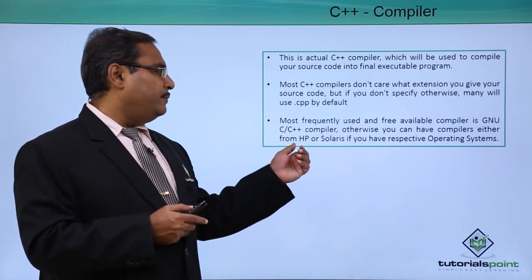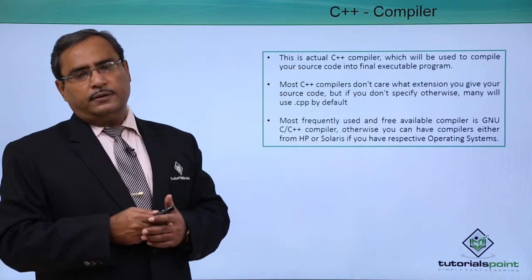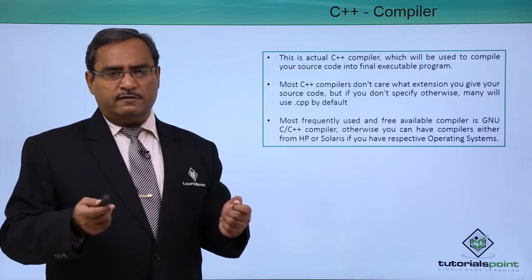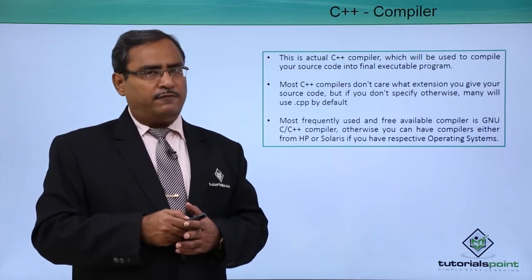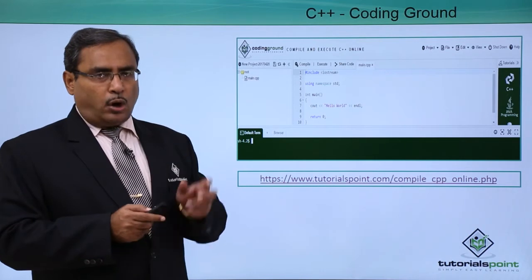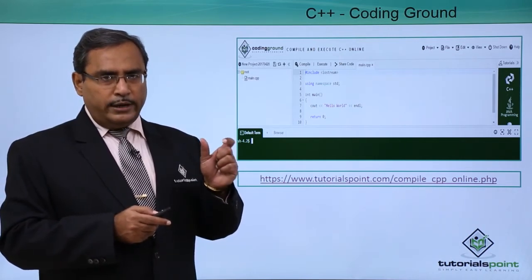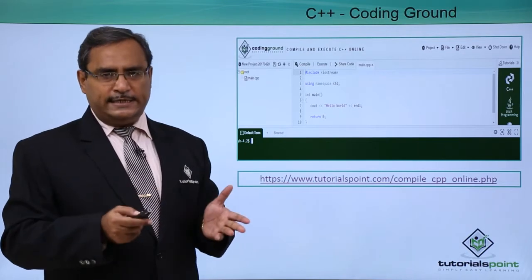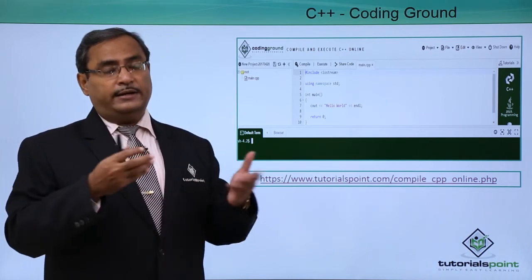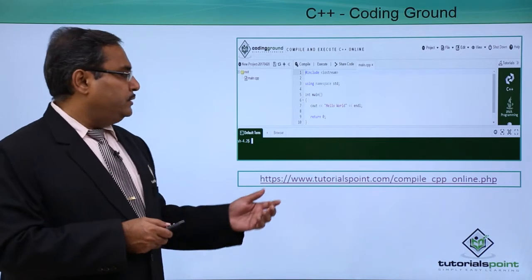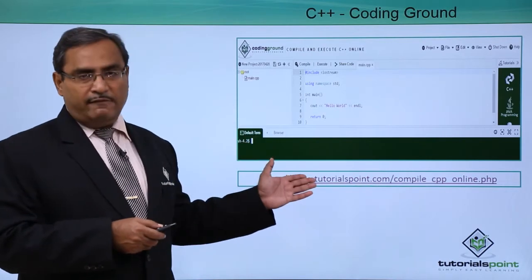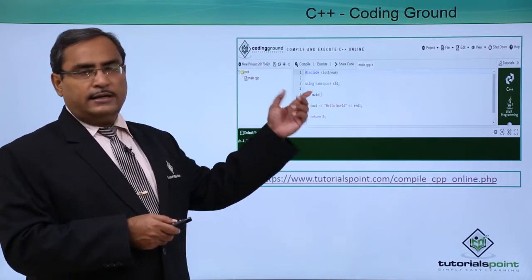You can also have compilers from HP or Solaris if you have those respective operating systems. We require one editor and one compiler, and the versions will be decided based on the system's platform and operating system. If you go to the Tutorials Point Coding Ground option, that is one option where you can type your programs and execute different language programs online. You need not load any software on your system — you can directly use those softwares online and visit the respective link to get that screen available for you.